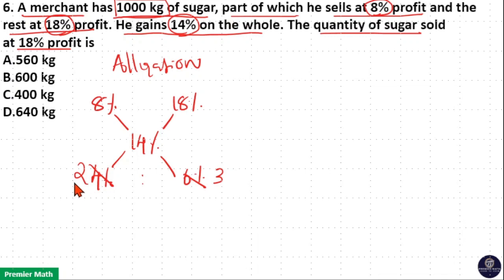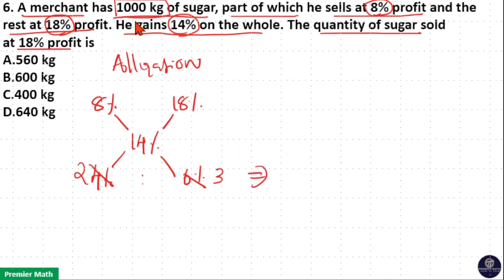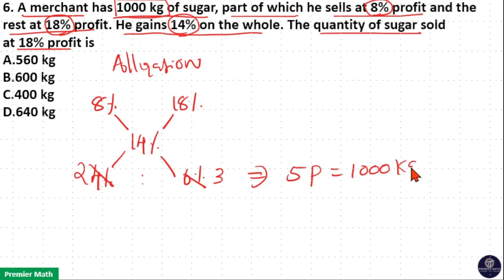2 units is the sugar sold at 8% profit, and 3 units is the sugar sold at 18% profit. The total amount of sugar is 1000 kg, that is, 2 plus 3 — a total of 5 parts — equals 1000 kg.